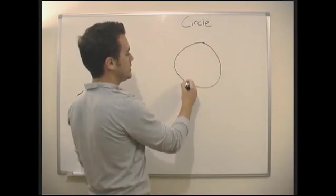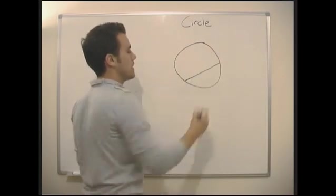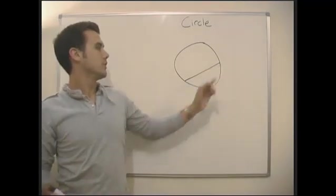There's our circle. Now any line we draw across the circle, doesn't matter where it is, is called a chord.